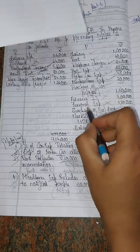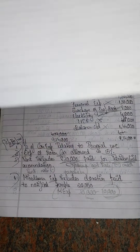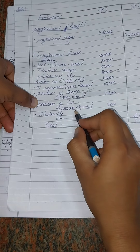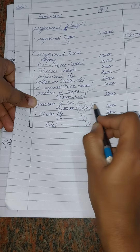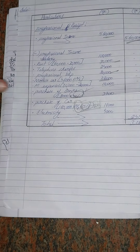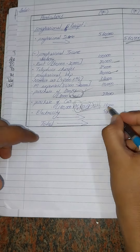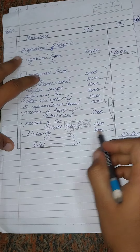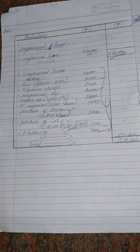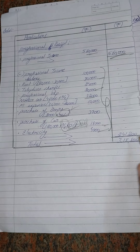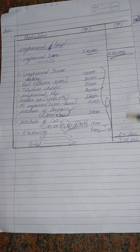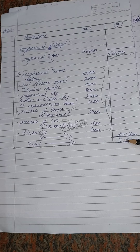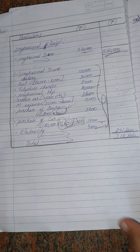Next, purchase of car is 1,80,000. Since two thirds are for professional use, depreciation on car is calculated as 1,80,000 into 2/3, at 15%, giving 18,000. Electricity is 4,000, allowed as is. The final income from profession is computed and the total comes to approximately 3,800, giving the income from profession figure.